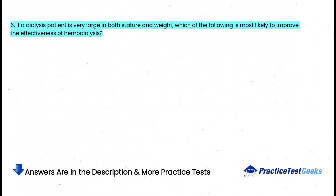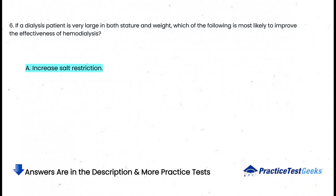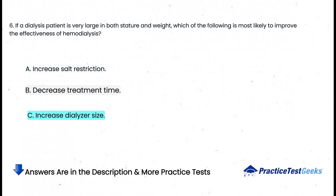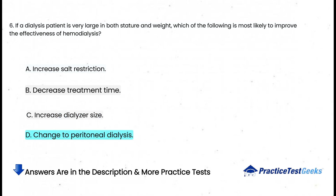If a dialysis patient is very large in both stature and weight, which of the following is most likely to improve the effectiveness of hemodialysis? a. Increased salt restriction, b. Decreased treatment time, c. Increased dialyzer size, d. Change to peritoneal dialysis.